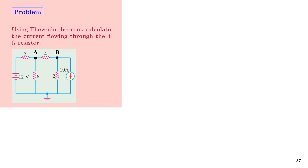We shall now solve another problem: using Thevenin's theorem, calculate the current flowing through the 4 ohm resistor. In the figure, the 4 ohm resistor appears across terminals A and B. The circuit includes a 12V voltage source, a 10A current source, and resistors of 3 ohm, 6 ohm, and 2 ohm. The circuit is grounded at point C.